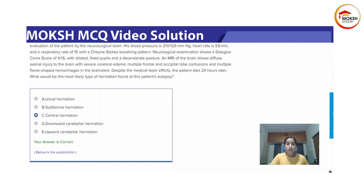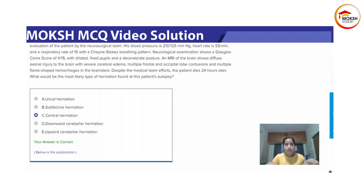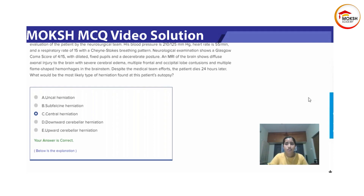For uncal herniation, they will usually give you the specific features: an ipsilateral blown pupil and a contralateral hemiparesis. But sometimes they will talk about the Kernohan notch or Kernohan phenomenon, which is a misleading presentation — the patient will present with a contralateral blown pupil and an ipsilateral hemiparesis. It's called the Kernohan phenomenon, due to compression of the Kernohan notch present on the opposite edge of the tentorium.